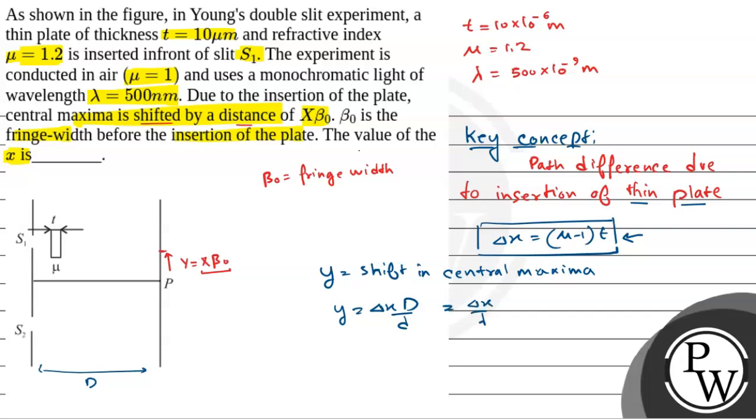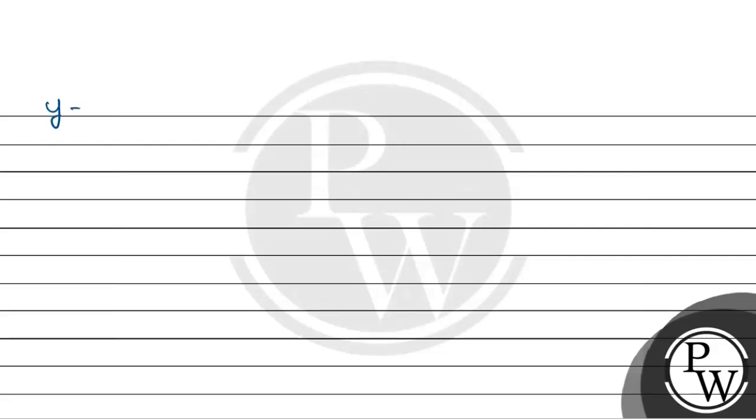This form can be written as del x by lambda into lambda D by small d. Now lambda D by small d is what? That is the fringe width, so beta naught, fringe width equals lambda D by d. So this equals del x beta naught by lambda. That is shift in the central fringe.